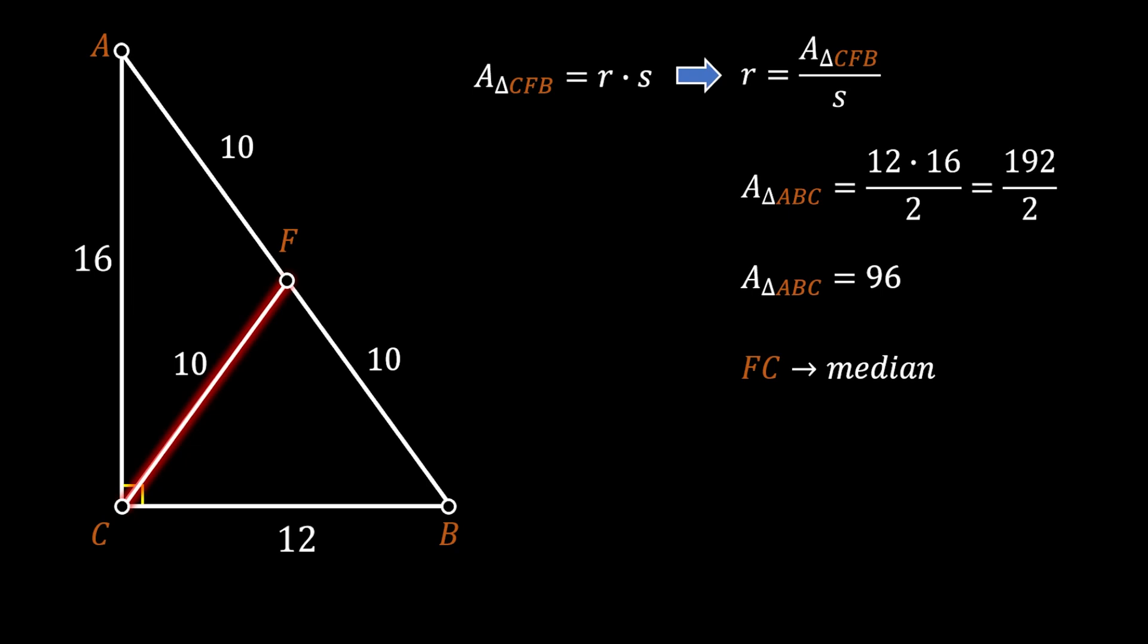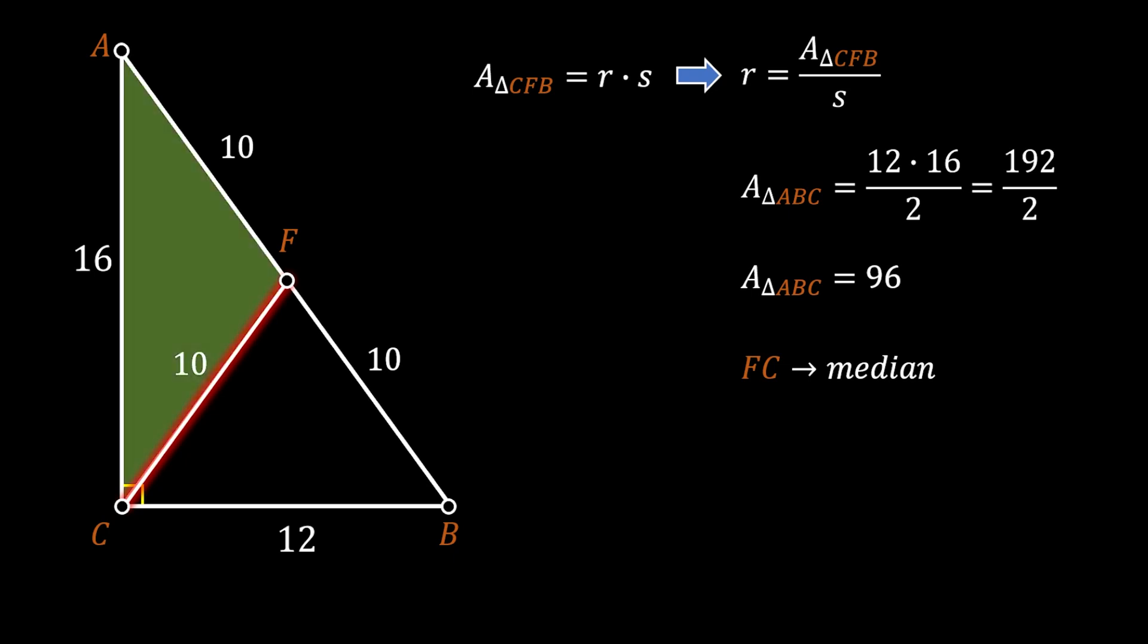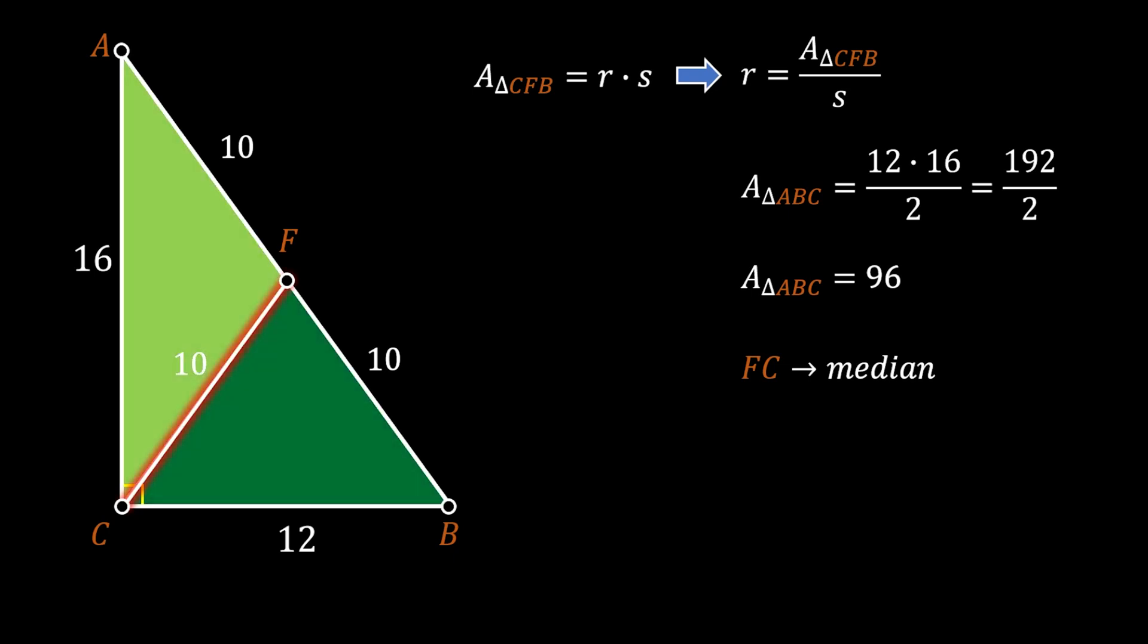And the median of a triangle furthermore divides the triangle into two triangles having the same area. So, in our case, that means that the triangle AFC and the triangle CFB must have the same area. Since the area of our big triangle is equal to 96, that means that both of those triangles must have the area of 48 square units.